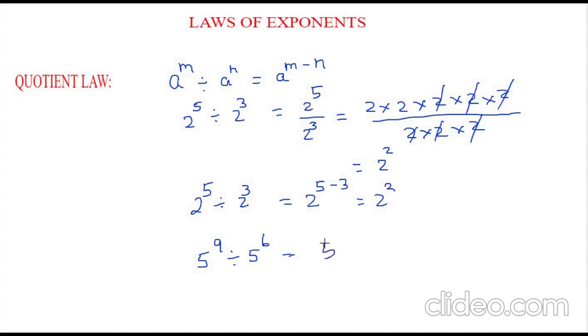So the law states 5 to the power of 9 minus 6 which is equal to 5 to the power of 3. Right. So isn't it very easy?